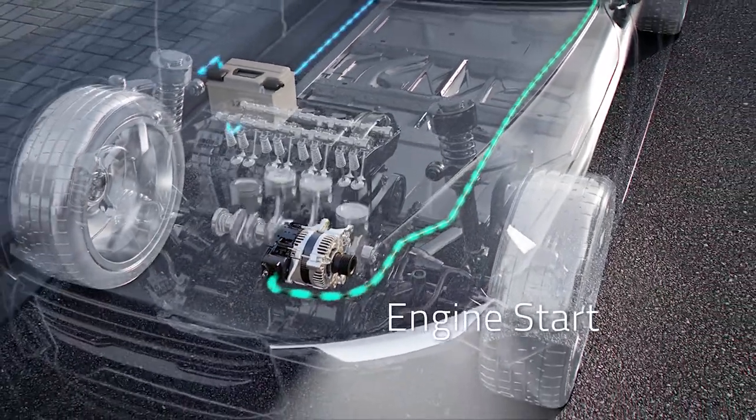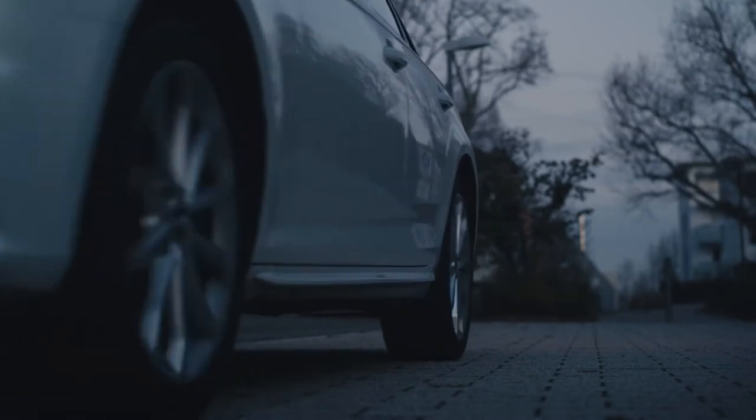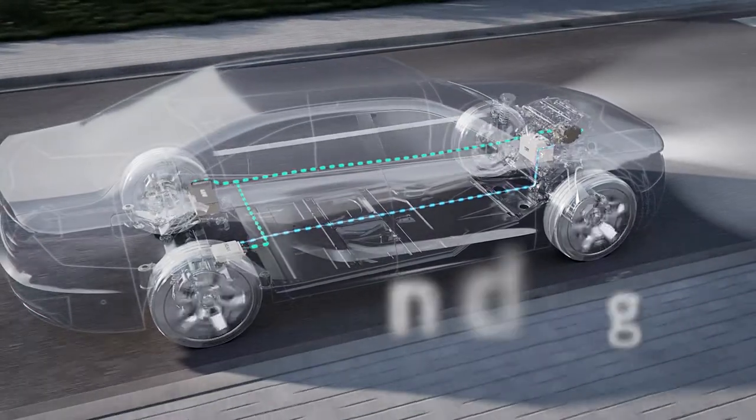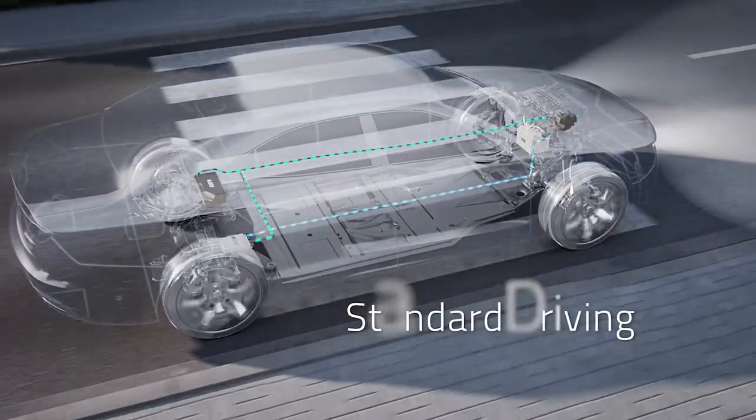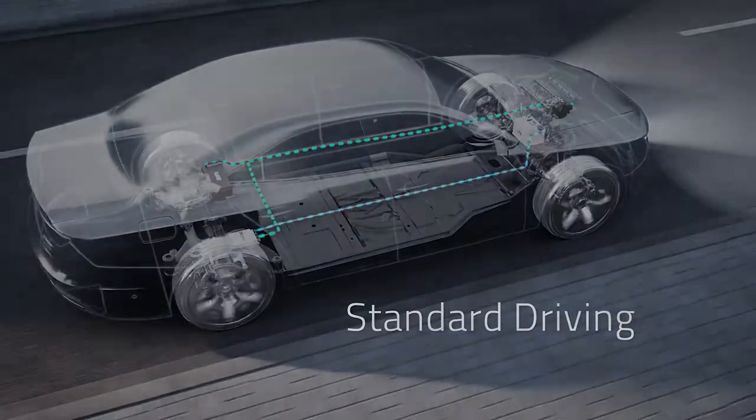The BRM provides electrical energy, which is stored in a 48-volt battery. Via a DC-DC converter, the 12-volt onboard power supply is ensured.